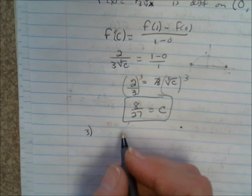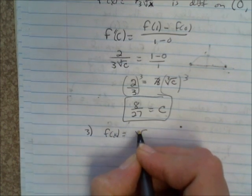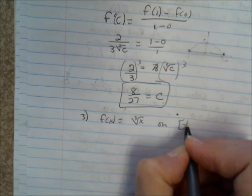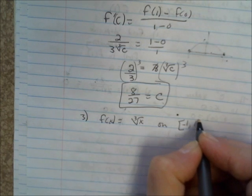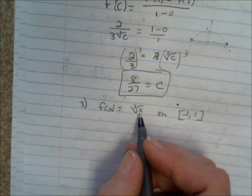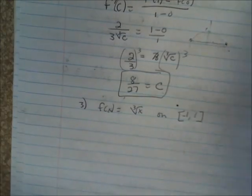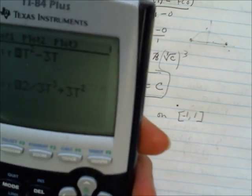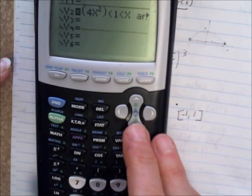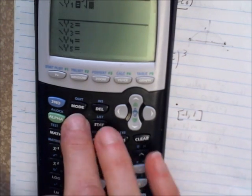Example number 3: let's say f(x) equals just plain old cubed root of x, and let's go through the interval between negative 1 and positive 1. Is this a continuous function? I think it is. Let's just take a look. Where's my calculator? Math, option 4, the cubed root of x.